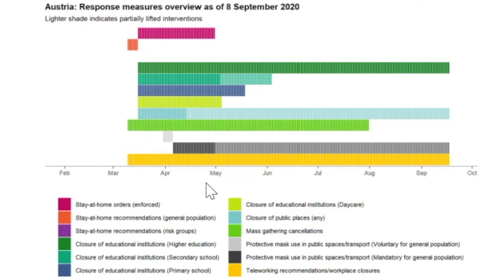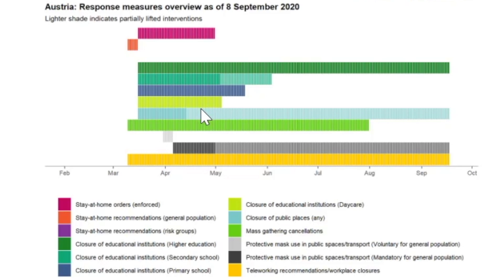Down below, superimposed, it tells you exactly what sort of policy measures were put in place. This very dark reddish-pink bar is the stay-at-home order enforced; prior to that was the stay-at-home recommendation. This green one was the closure of educational institutions of higher education. The more cyan would have been high school, and the blue the closure of primary schools. A lighter green is closure of daycare institutions. There is also the closure of public places, mass gathering cancellations, protective mask use in public and in public transportation for the general population, and teleworking recommendations and workplace closures. You can see these same graphs for every single country, since different countries imposed different restrictions at different times.